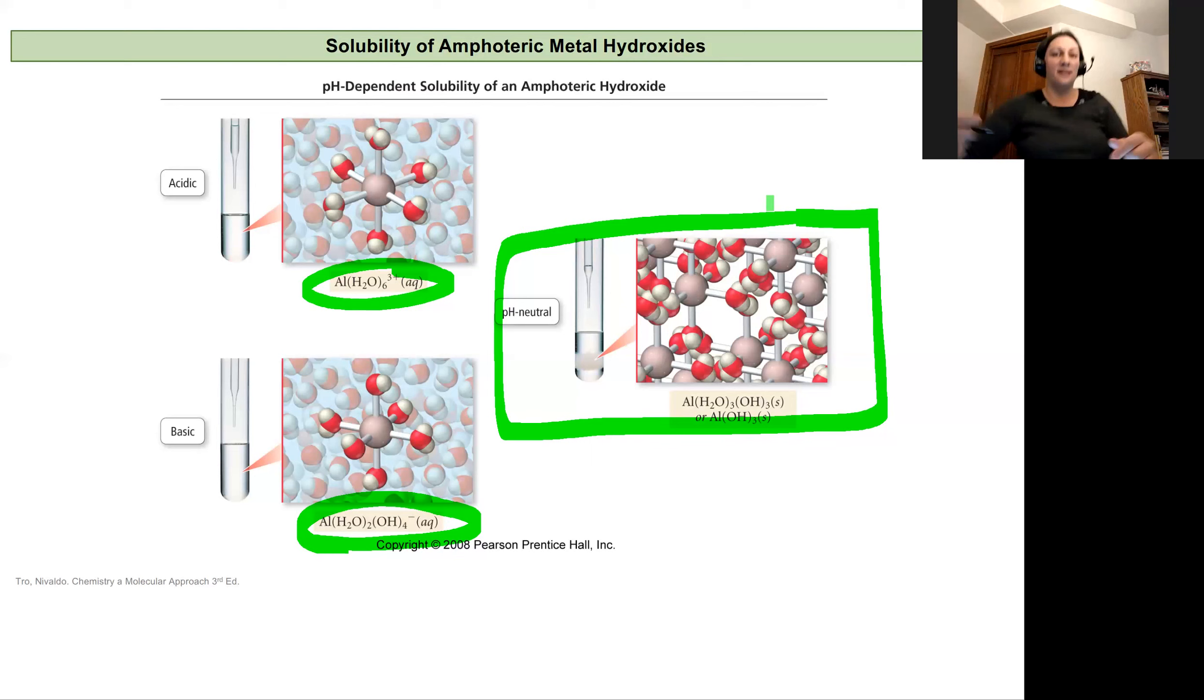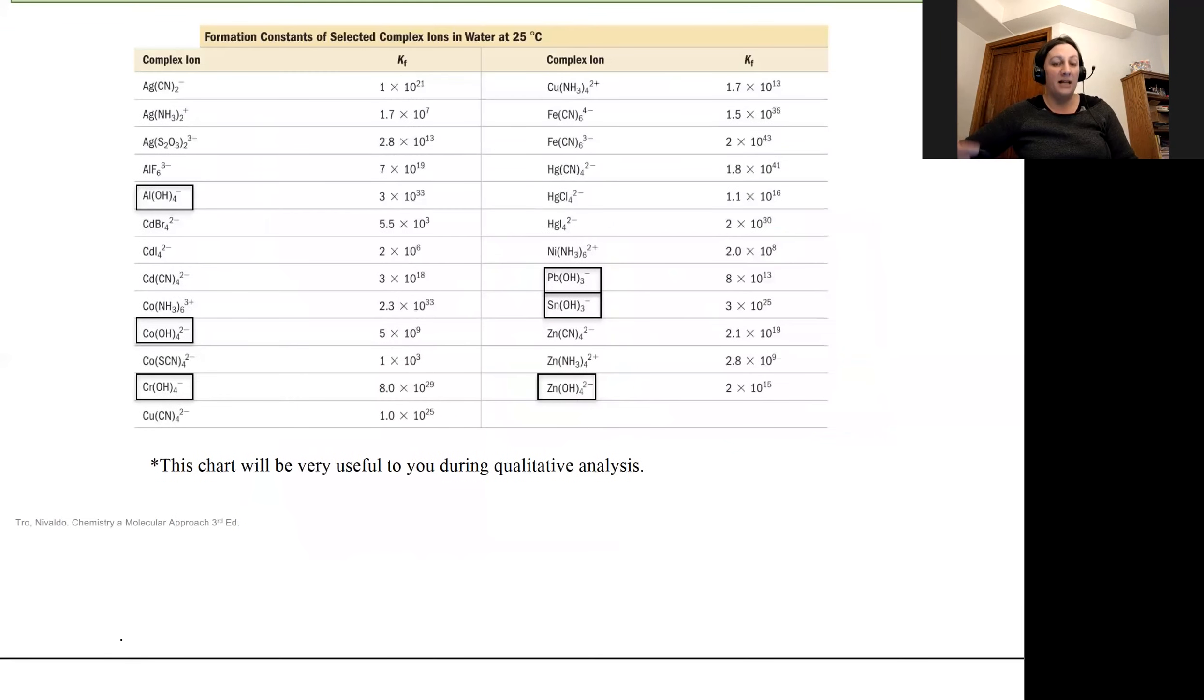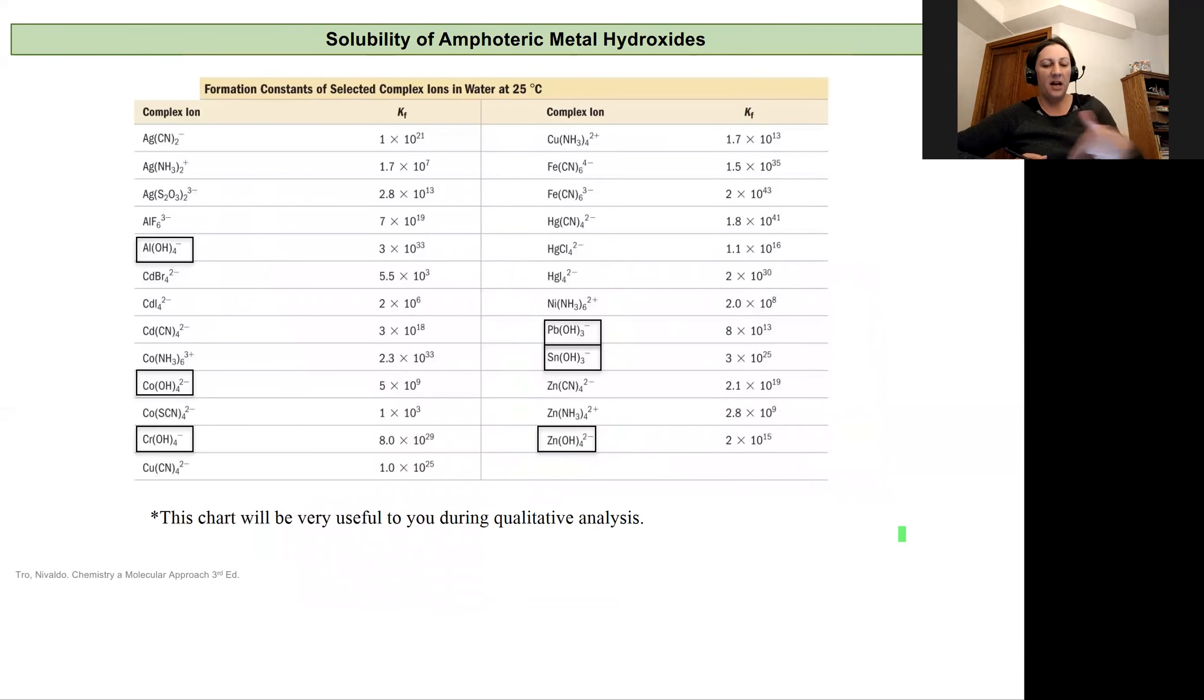I'm going to go back to the slide I skipped now. This was just looking at formation constants for different metal hydroxides. This is just our formation constant table. And I just want to use it to point out our hydroxide ions here and their formation constants. They're all quite large.